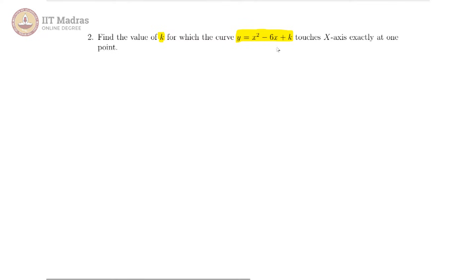First observation should be that the vertex is given to us - the vertex which is minus b by 2a. Here a is equal to 1, b is minus 6, and c is then k.